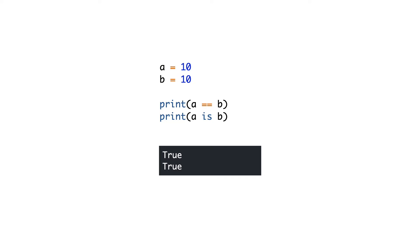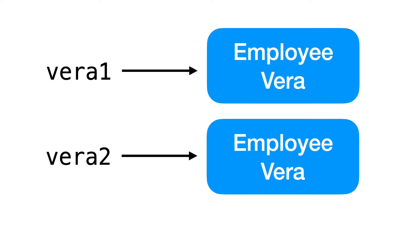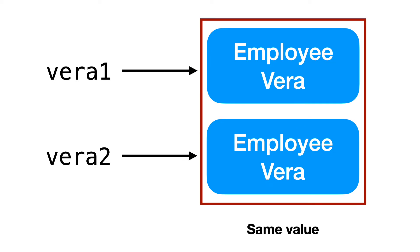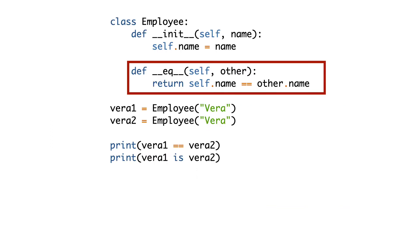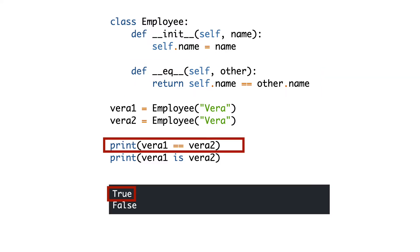Let's start with object equality. Object equality means that even if two objects live at different memory locations, they are considered to be the same. Here you can see two objects with the same employee name, each assigned to a variable. As authors of the class we want to define that the objects are equal to each other. You can do this by implementing dunder equals, as you see here. When I run the code, the equality check now returns true. Notice that the identity check still returns false.